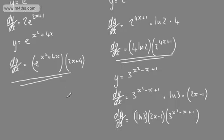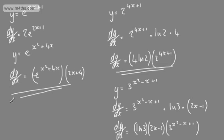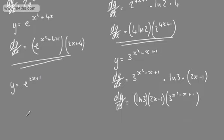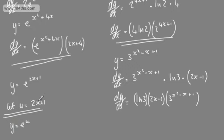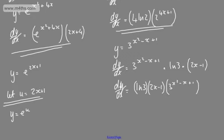Now when I'm talking about this inside function, let's just apply the formal chain rule approach here. Let's say that y is equal to e to the 2x plus 1. What we're going to do is make a substitution: let u be equal to 2x plus 1. So what we've got here now is y is equal to e to the u, where u is 2x plus 1. By the chain rule, we can say that dy by dx will be equal to dy by du multiplied by du by dx.